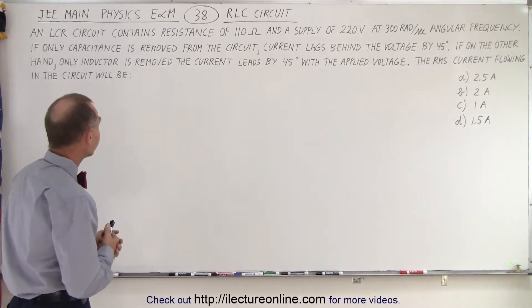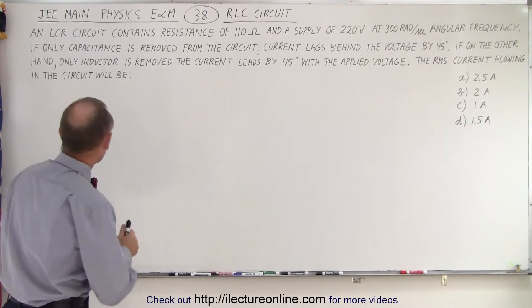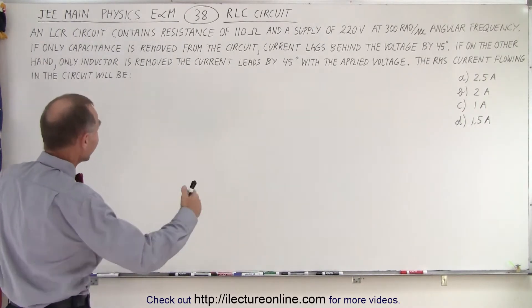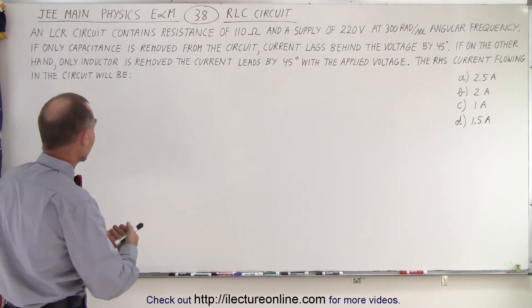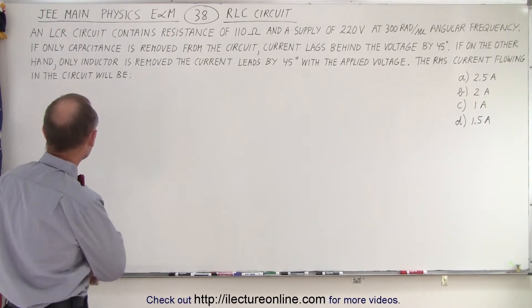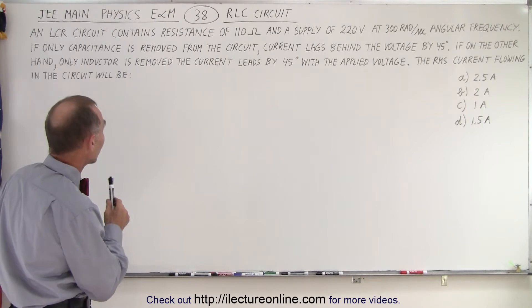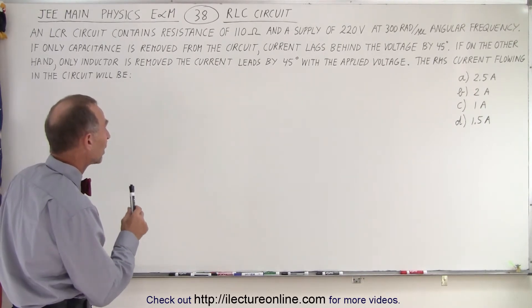We're dealing with an RCL circuit. Now interestingly enough, in India they call it an LCR circuit, but it's the same thing. It's resistance, inductance, and capacitance. An LCR circuit contains resistance of 110 ohms and a supply of 220 volts at 300 radians per second.